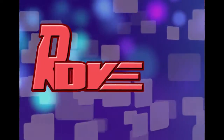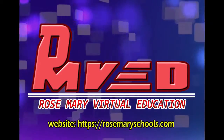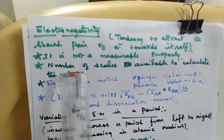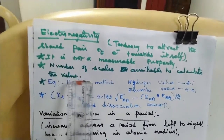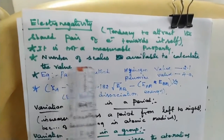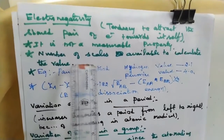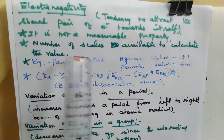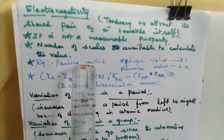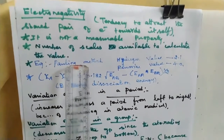Welcome to Electronegativity. Electronegativity is the tendency to attract the bonded pair of electrons towards itself. For example, Hydrogen Chloride. Hydrogen and Chlorine form a single bond. Chlorine is placed in the halogen family and it has high electronegativity tendency.